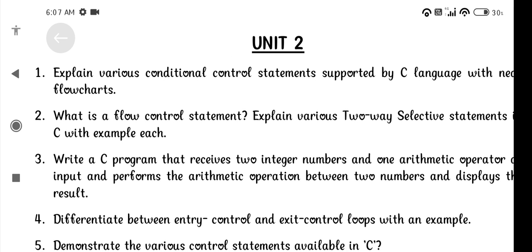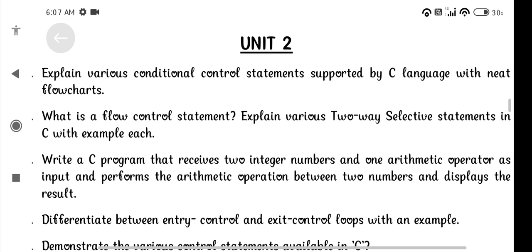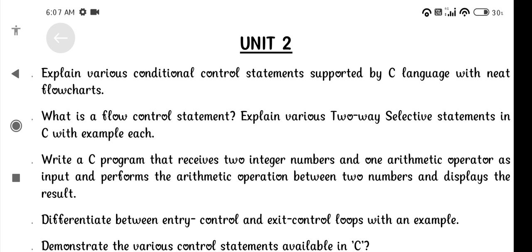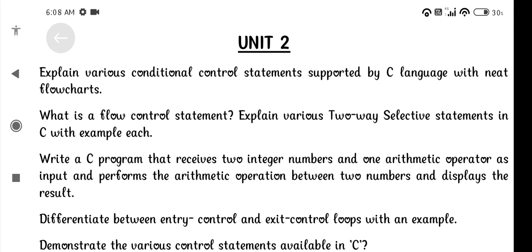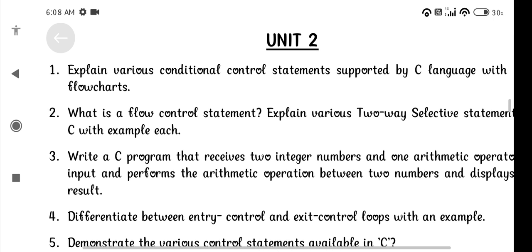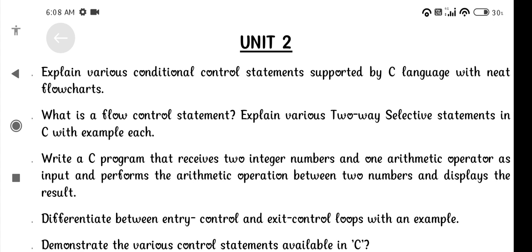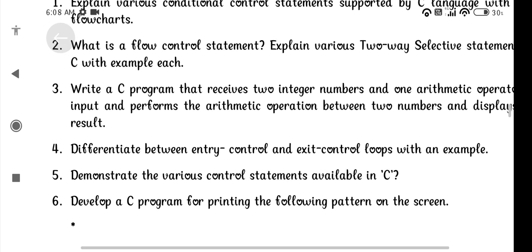Question number 3. Write a C program that receives two integer numbers and one arithmetic operator as input and performs the arithmetic operation between two numbers and displays the result. Question number 4. Differentiate between entry control and exit control loops with an example.